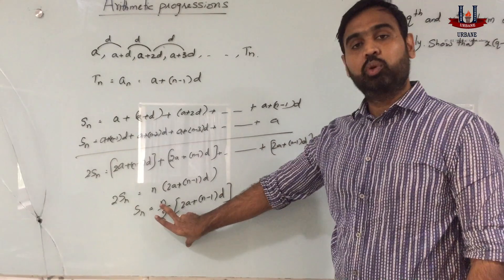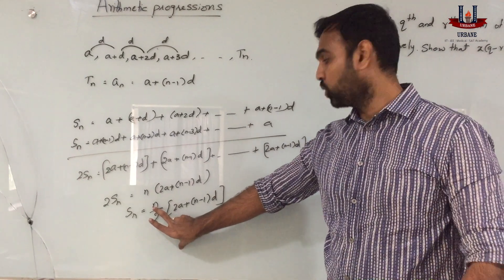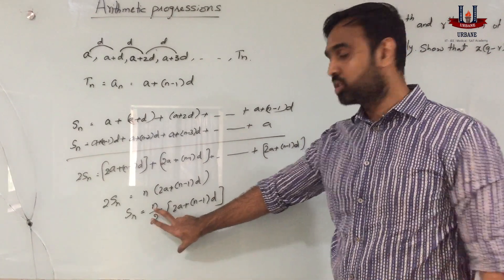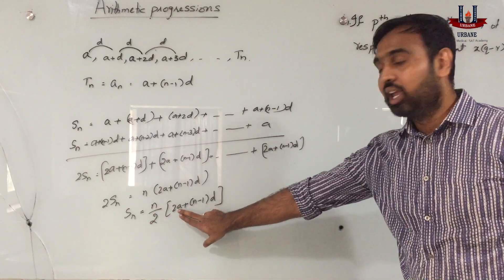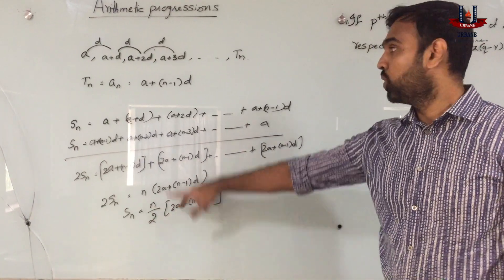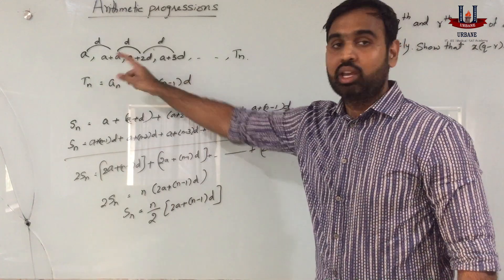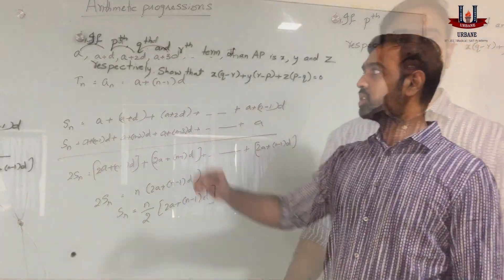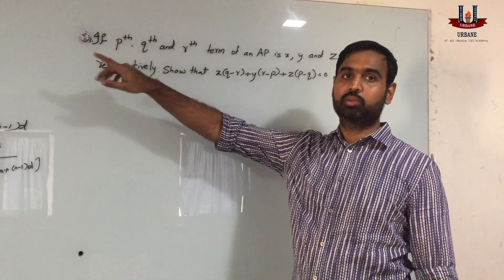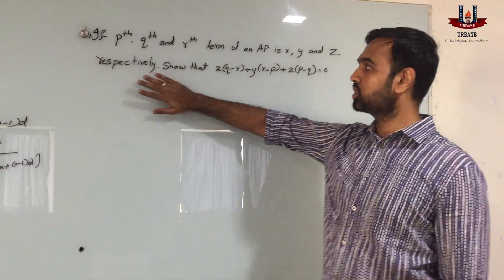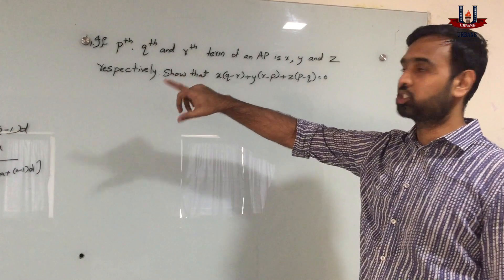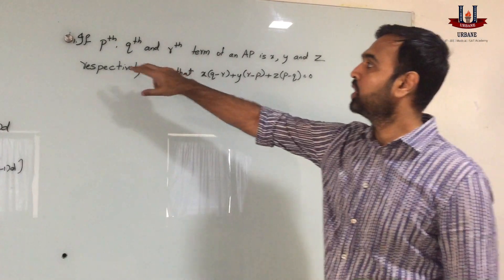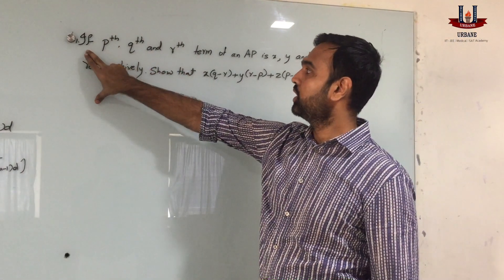Here, n is the position or the total number of values, a is the first term of the sequence, and d is the common difference.